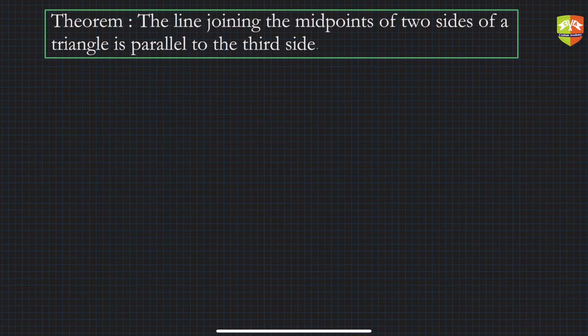The theorem says the line joining the midpoints of two sides of a triangle is parallel to the third side.